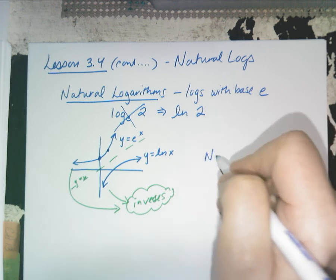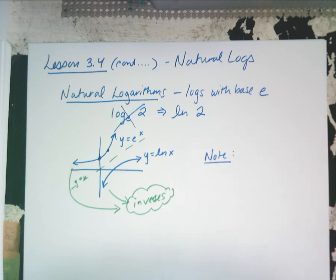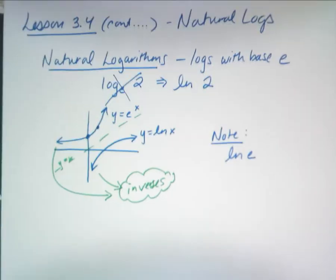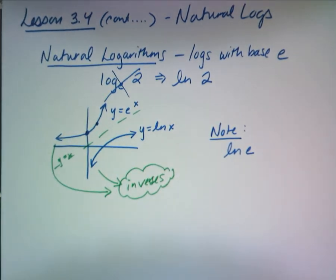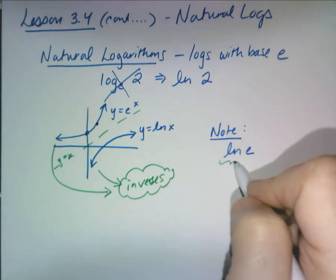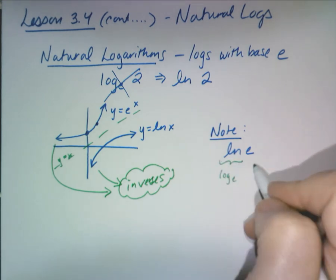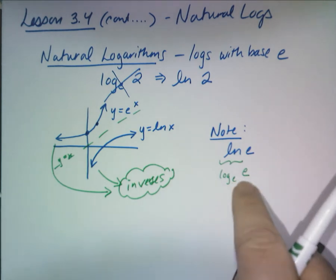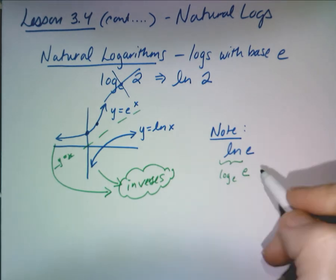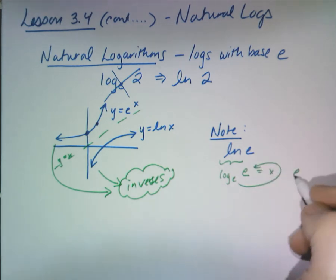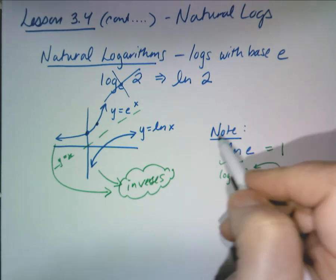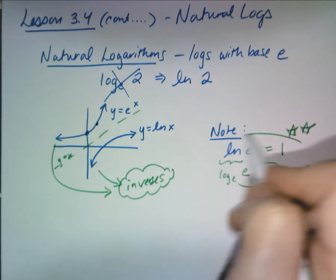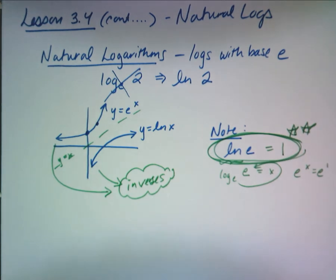Before we do problems, take special note of something to memorize: what is ln of e? Well, ln means log base e of e. What happens if the two bases are the same? It's 1. If you set it equal to x, you'd get e to the x equals e, so x must be one. Put a star on this: ln of e equals 1.